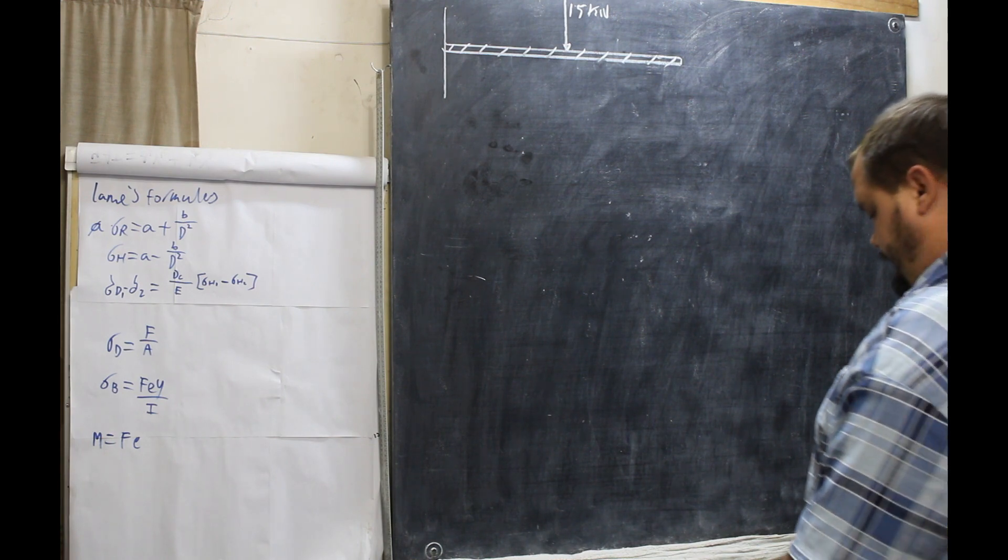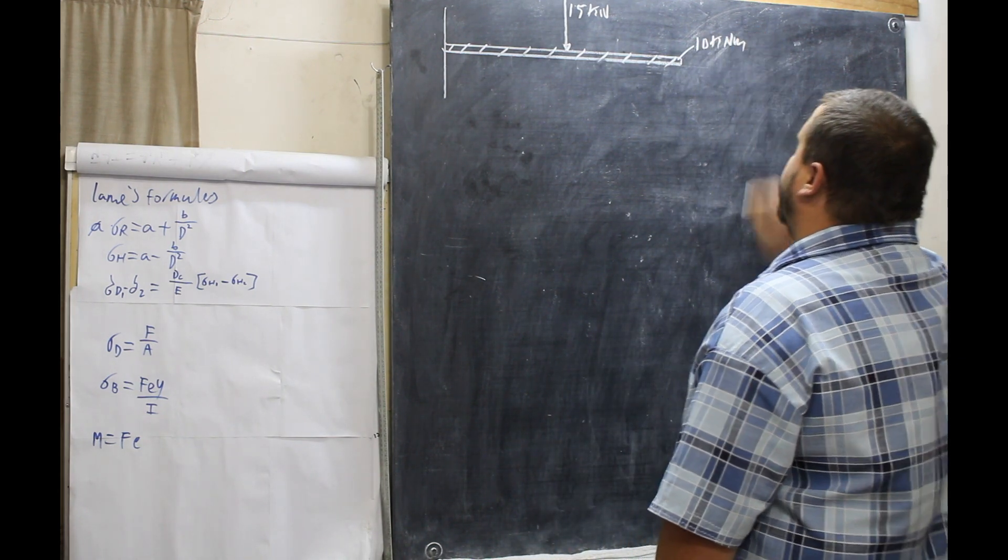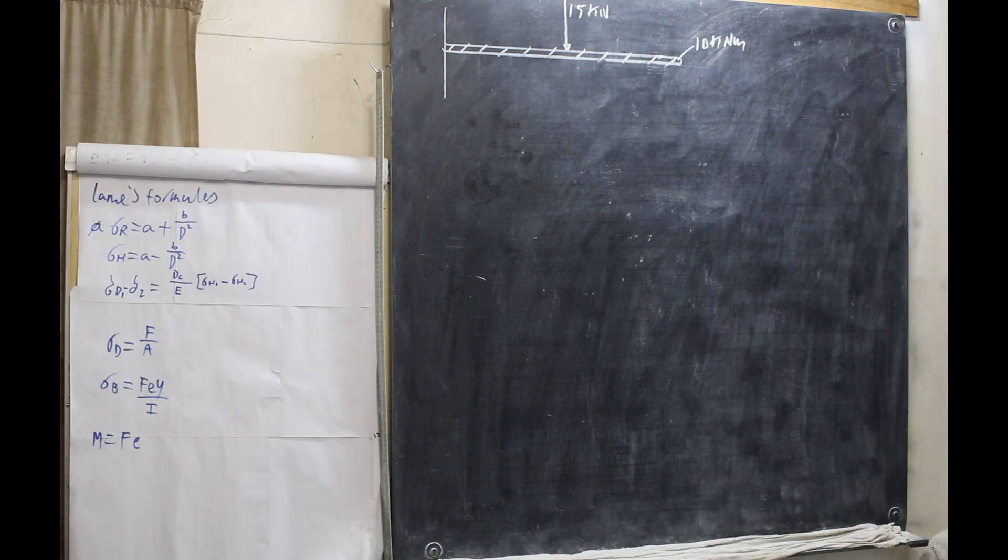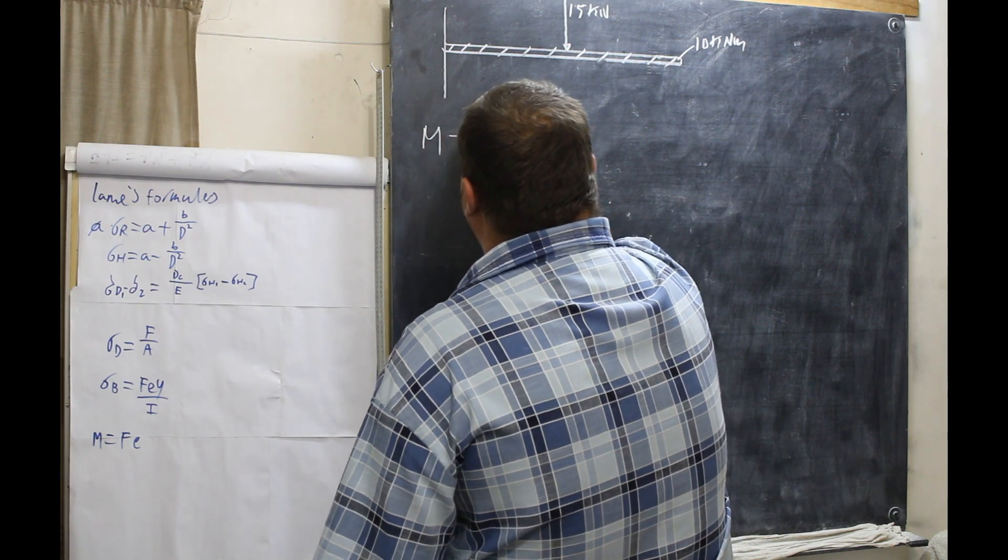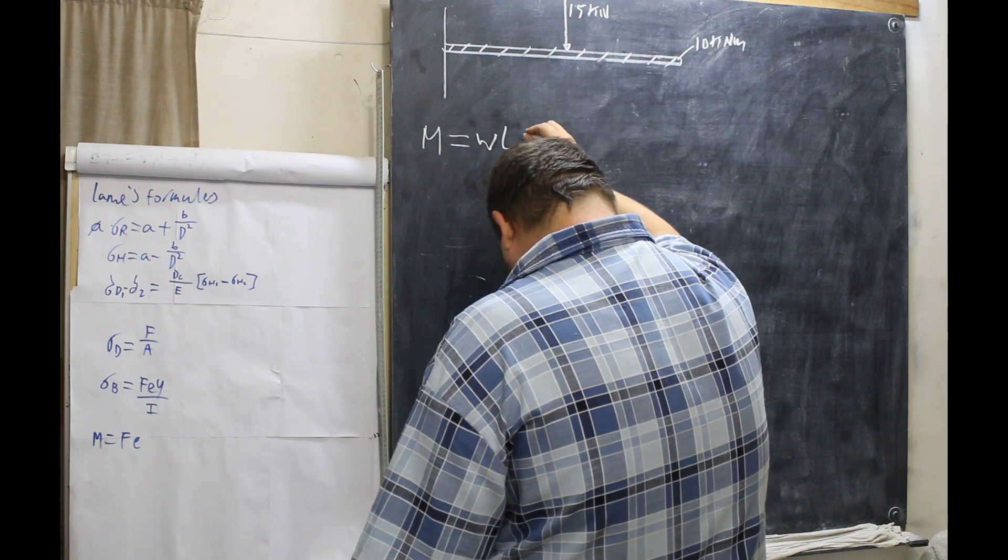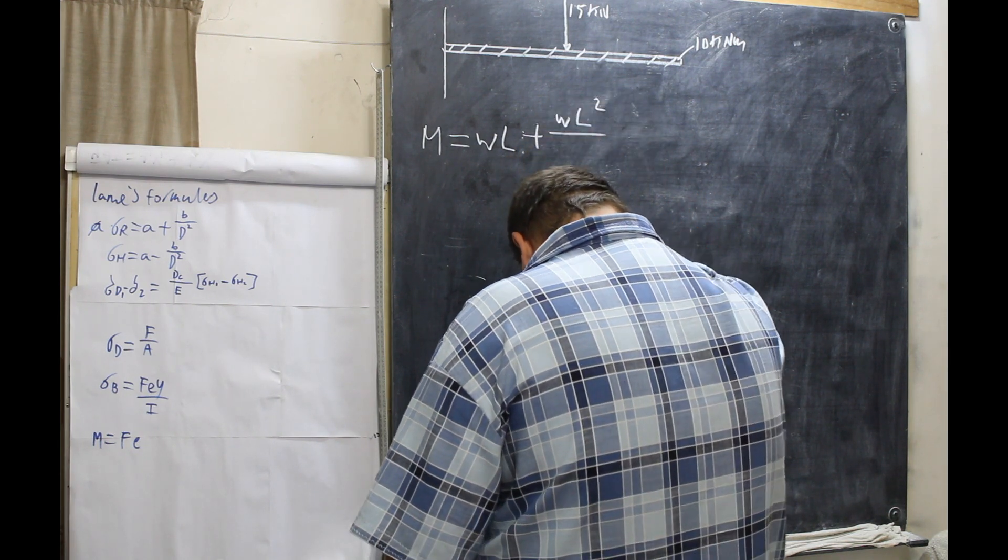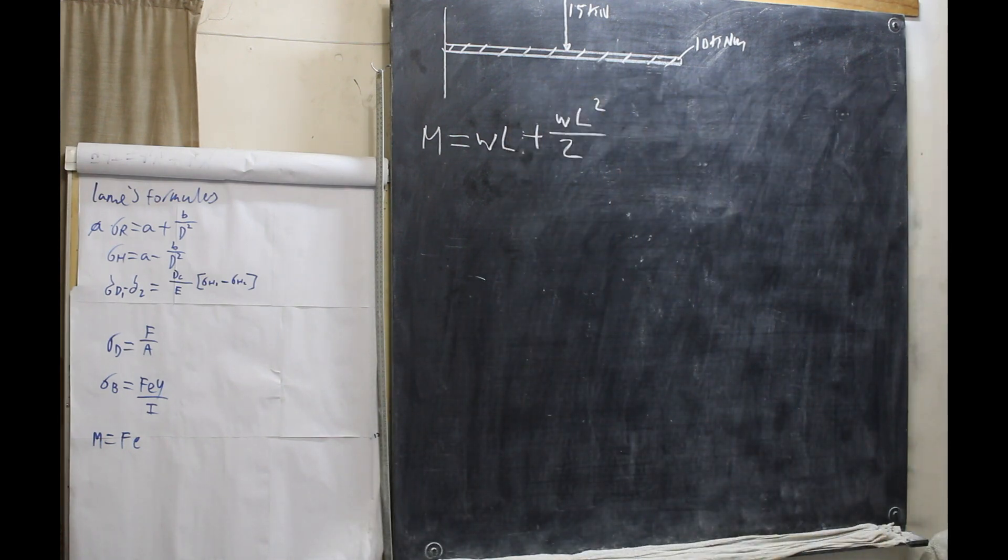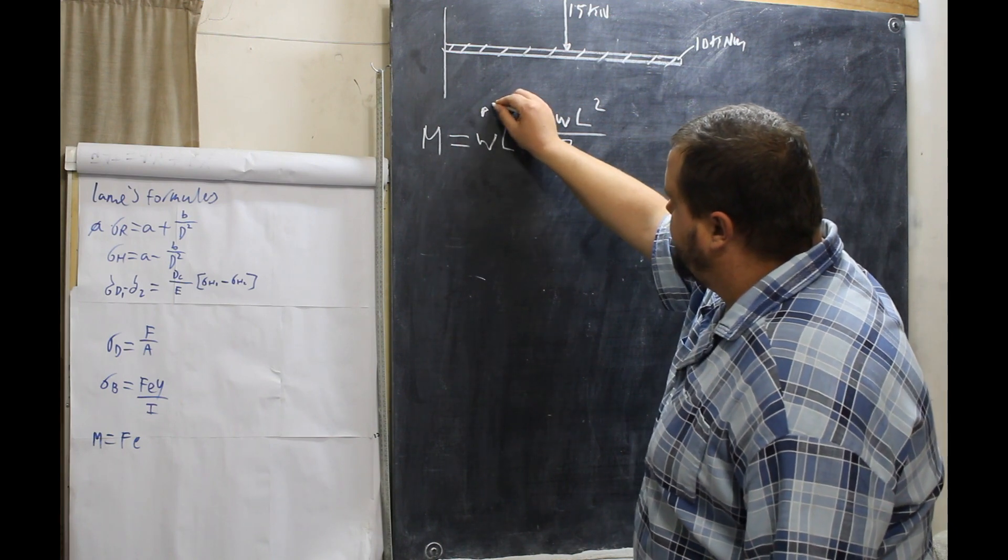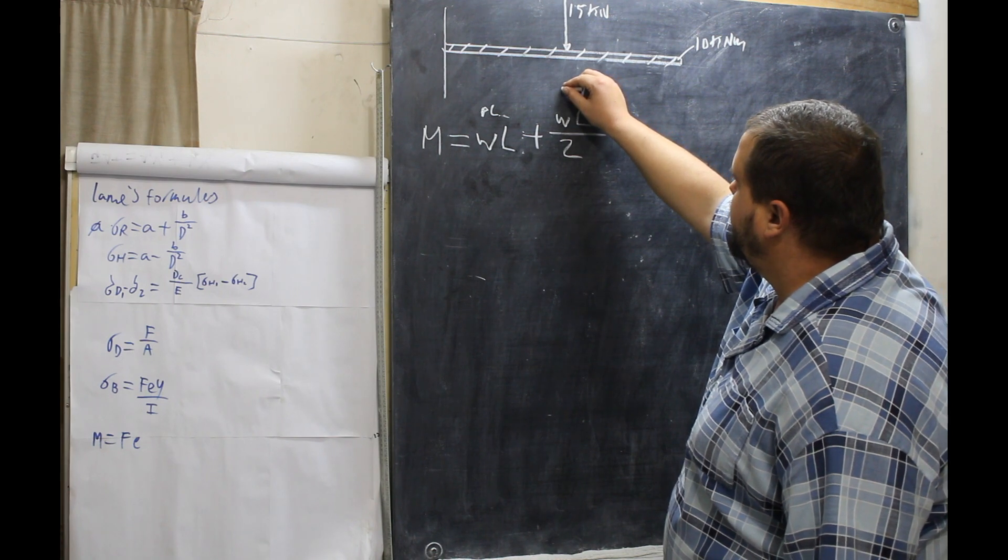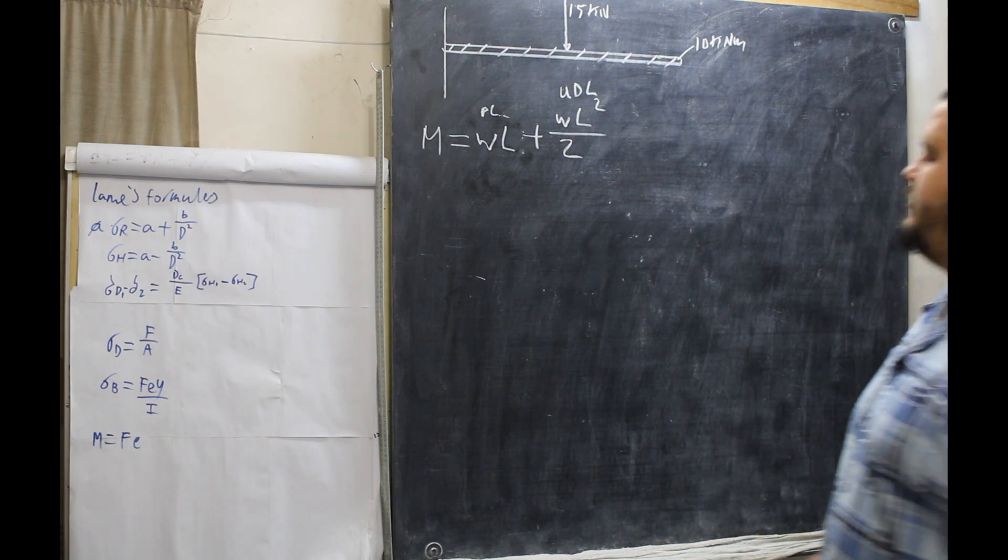Now we know the weight of the beam is 10 kilonewton meters. So first things first, we need to calculate M. M is equal to WL plus WL squared all over 2. This is the formula for the point load. And this is the formula for the UDL. So we've got to add them together.